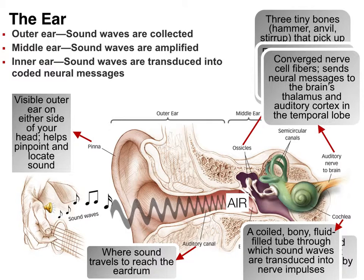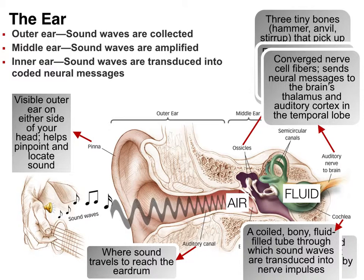An important thing to point out is that sound is traveling through air — it's the disruption of air molecules before it gets to the eardrum. But the cochlea has fluid in it. If you've ever tried to hear underwater, you know it's a lot harder. What the ossicles are doing is amplifying the information because it has to transition from air into that fluid. So the amplification from the ossicles makes up for what's being lost in going from air to fluid.